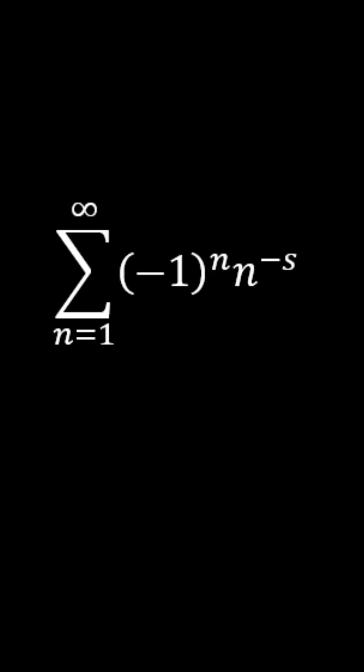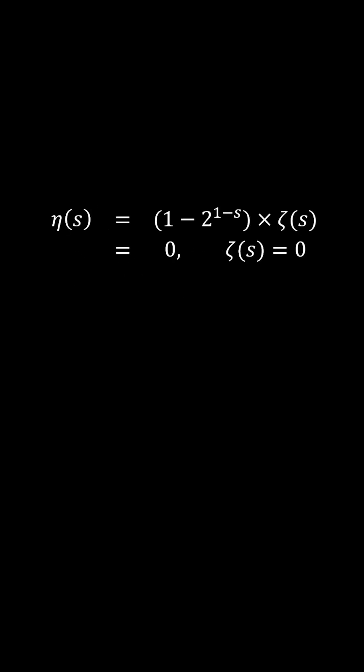Since the infinite series definition of the eta function includes all the non-trivial zeros, all the non-trivial zeros have a real part one half. Since anything times zero is zero, the Riemann hypothesis is correct.